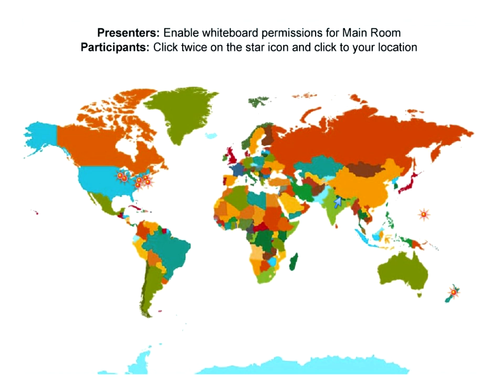So we have Dallas, New York, St. Paul Minnesota — a lot of U.S. people right now. And I see New Zealand way down in the corner there. I'm going to leave that up for a second if you want to take a minute. I think we've got just about everybody represented on the map.